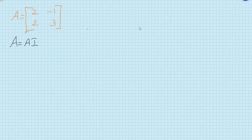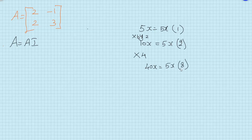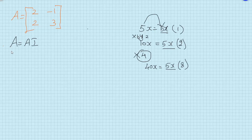To understand this, consider the equation 5x = 5x·1. If I multiply this equation by 2, I get 10x = 5x·2. If I multiply by 4, I get 40x = 5x·8. So I can keep A as A itself and change the constant on the right-hand side. We will perform row operations on the left-hand side matrix, but on the right-hand side, instead of doing it on the matrix, we will apply those operations to the identity matrix.